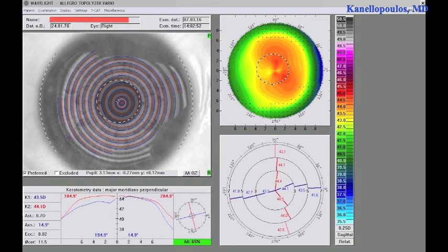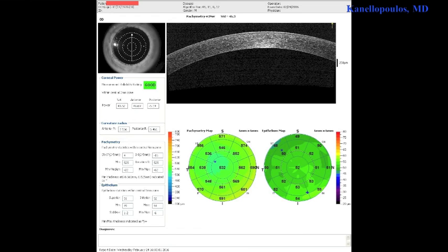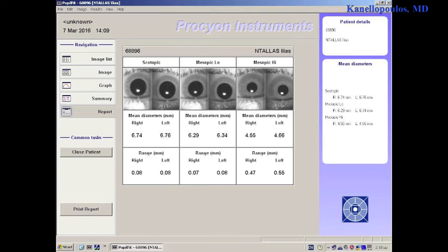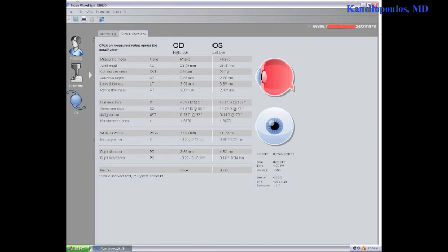And this is a topography that you can see that reveals some angle kappa, OCT to get a good view of the epithelium maps, Procyon, pupillometry, and then confirming the topographic astigmatism with the LENSTAR. Both eyes measured here.